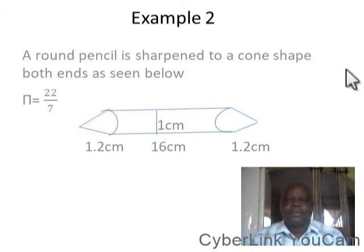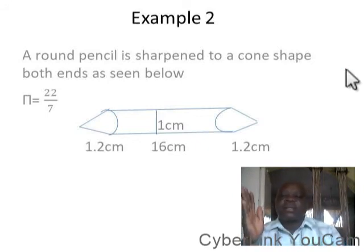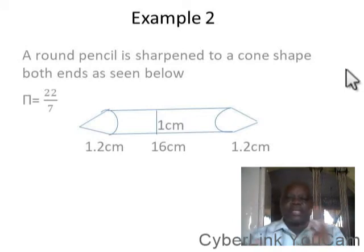This is a pencil sharpened at both ends, and when you sharpen a pencil, see the shape becomes a conical shape. Now what you have here is three parts: the first conical shape and the second conical shape at both ends, then in between you have a cylindrical shape. The diameter of both the cylinder and the cone is 1 cm, while the length of the cylindrical part of the pencil is 16 centimeters, and the length of the conical part is 1.2 centimeters each.